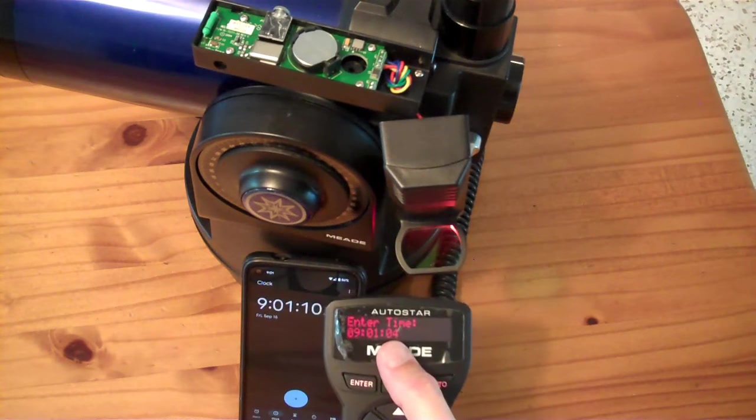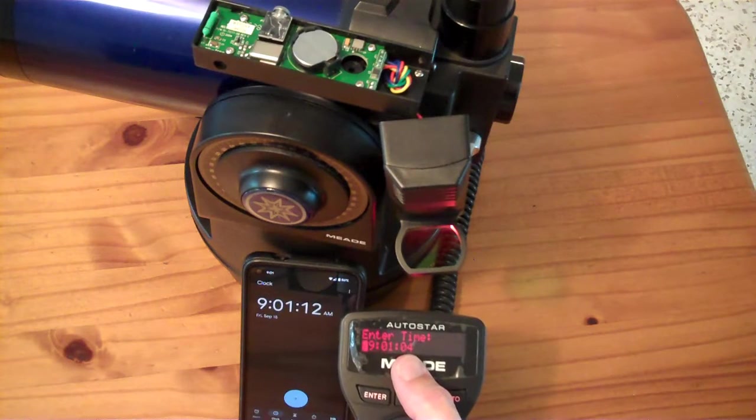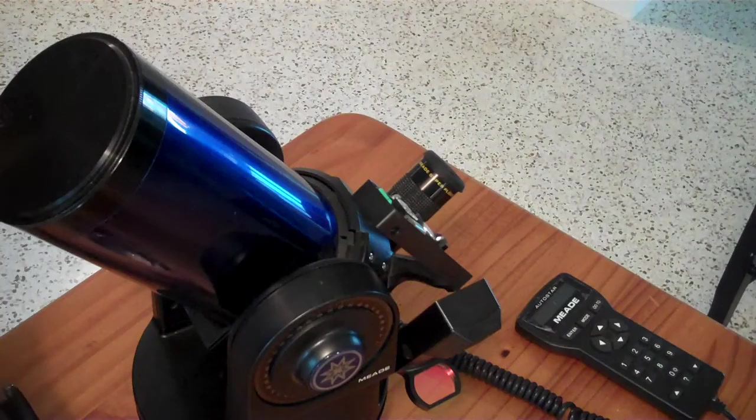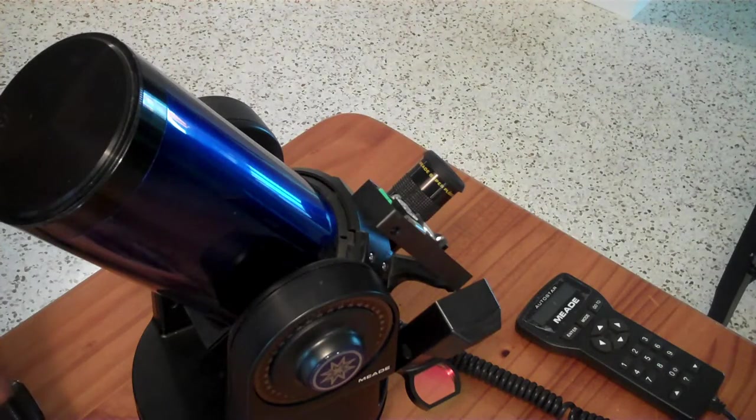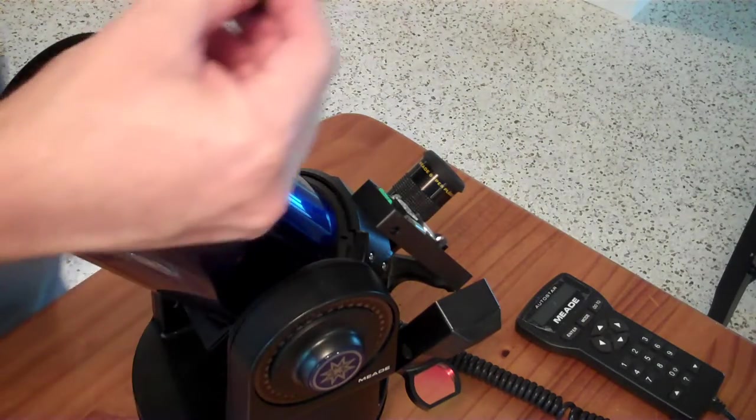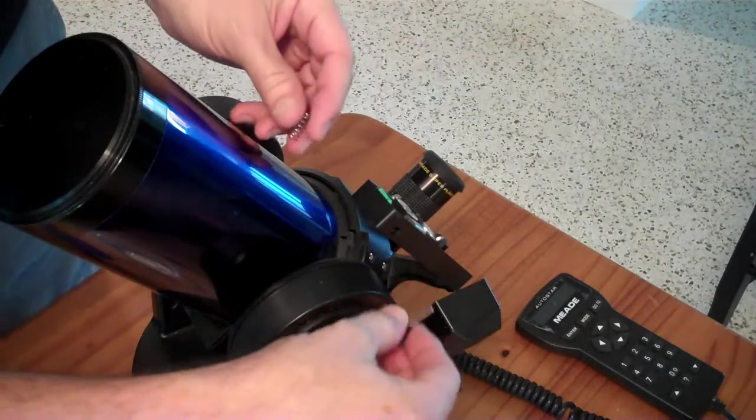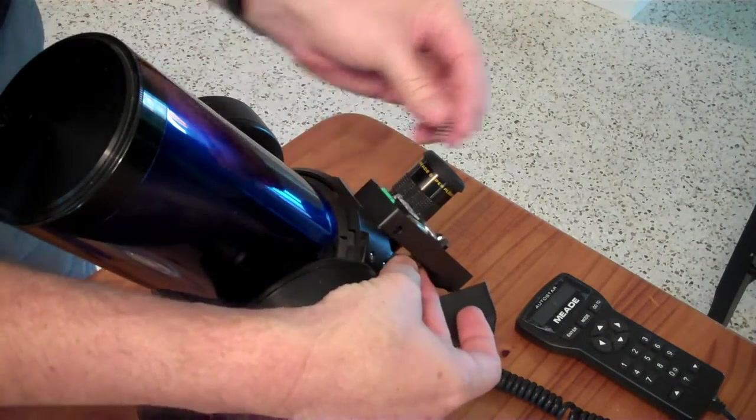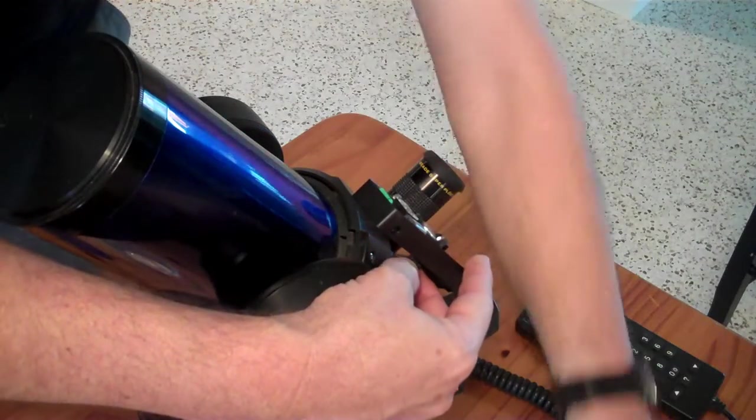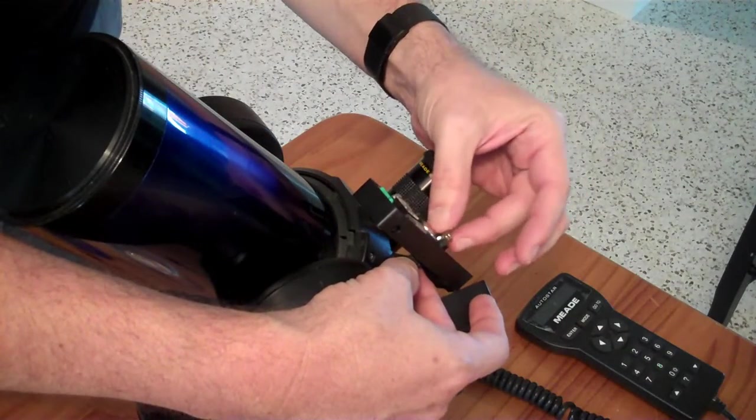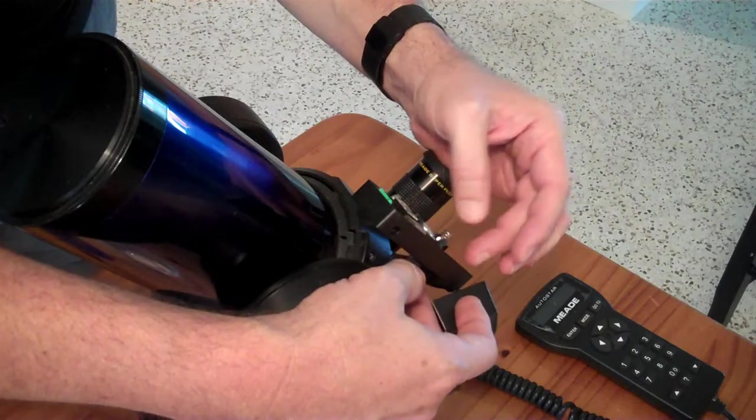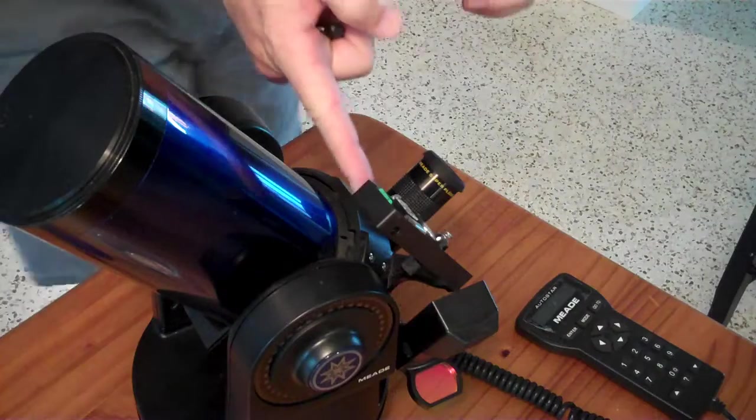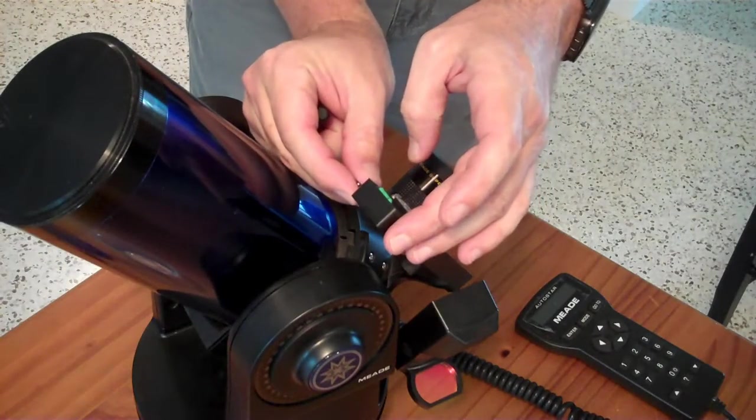A reassembly is the opposite of disassembly with the added complexity that you got these springs in the right spots. And so this spring here, the big one, fits over that guy there. And then the little spring will go in the hole that's on this side over here that's nearest the telescope.